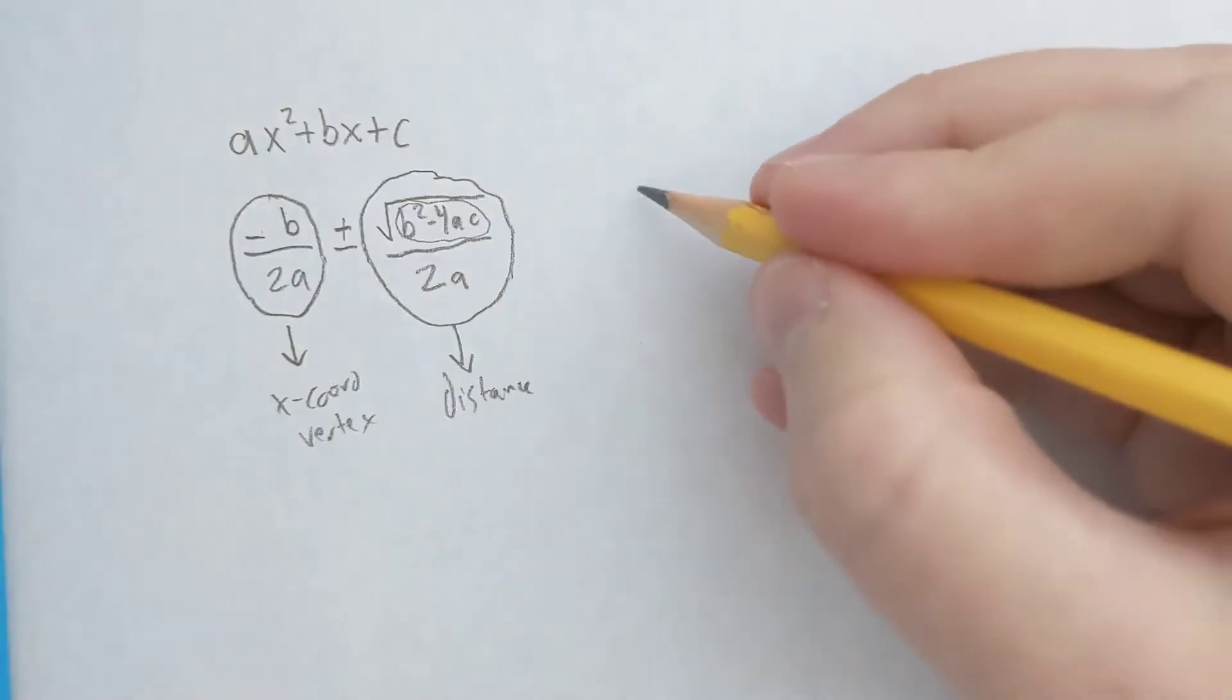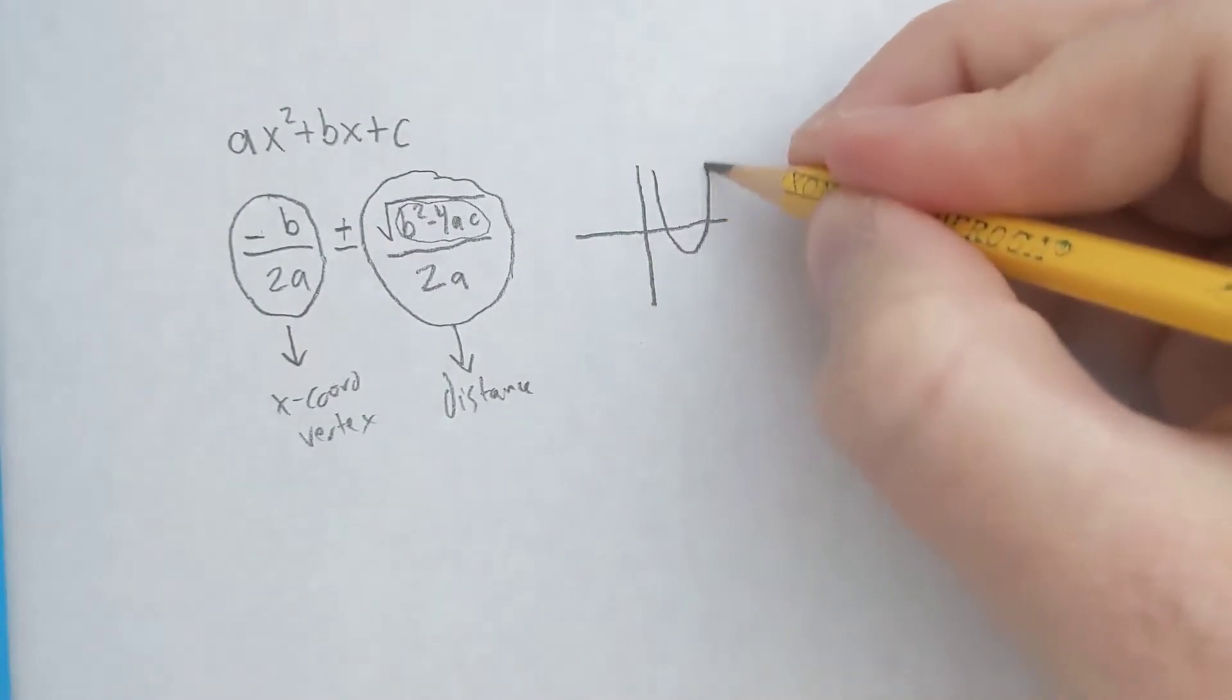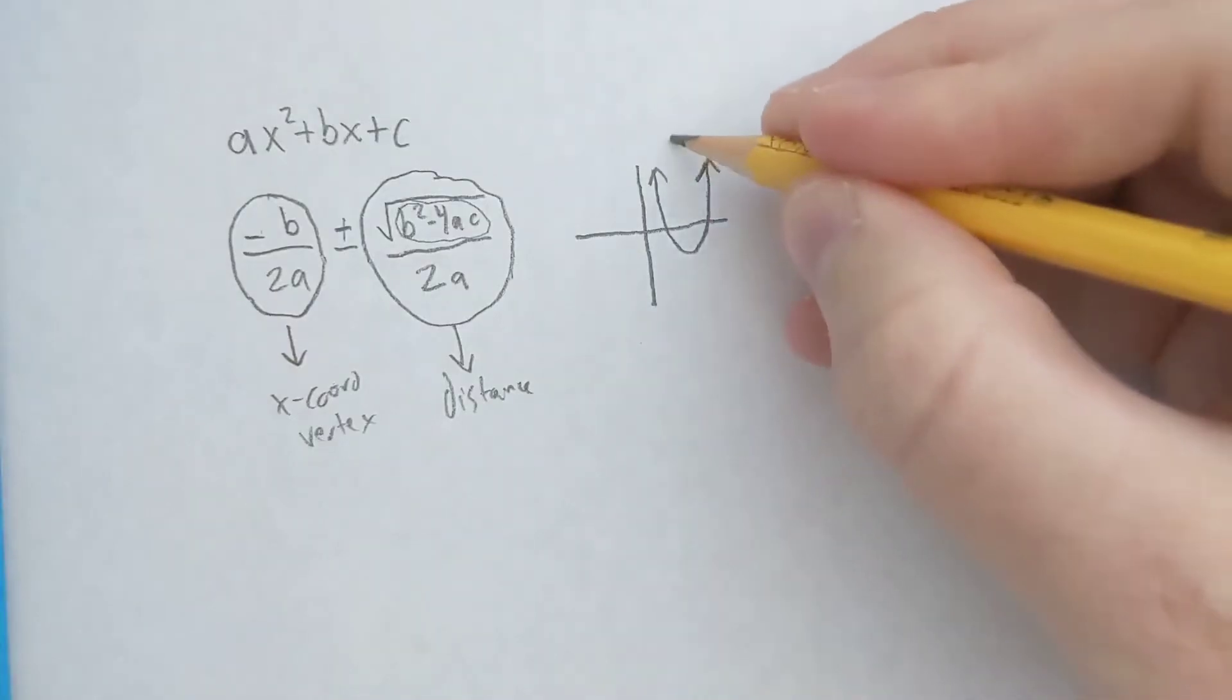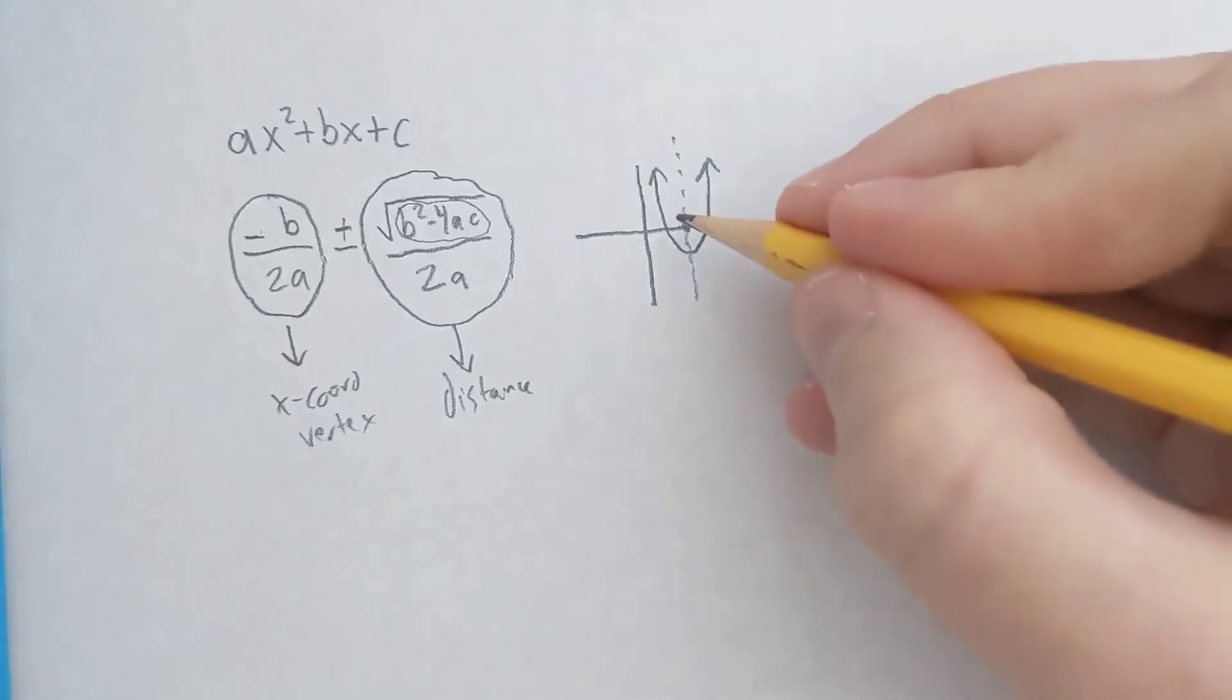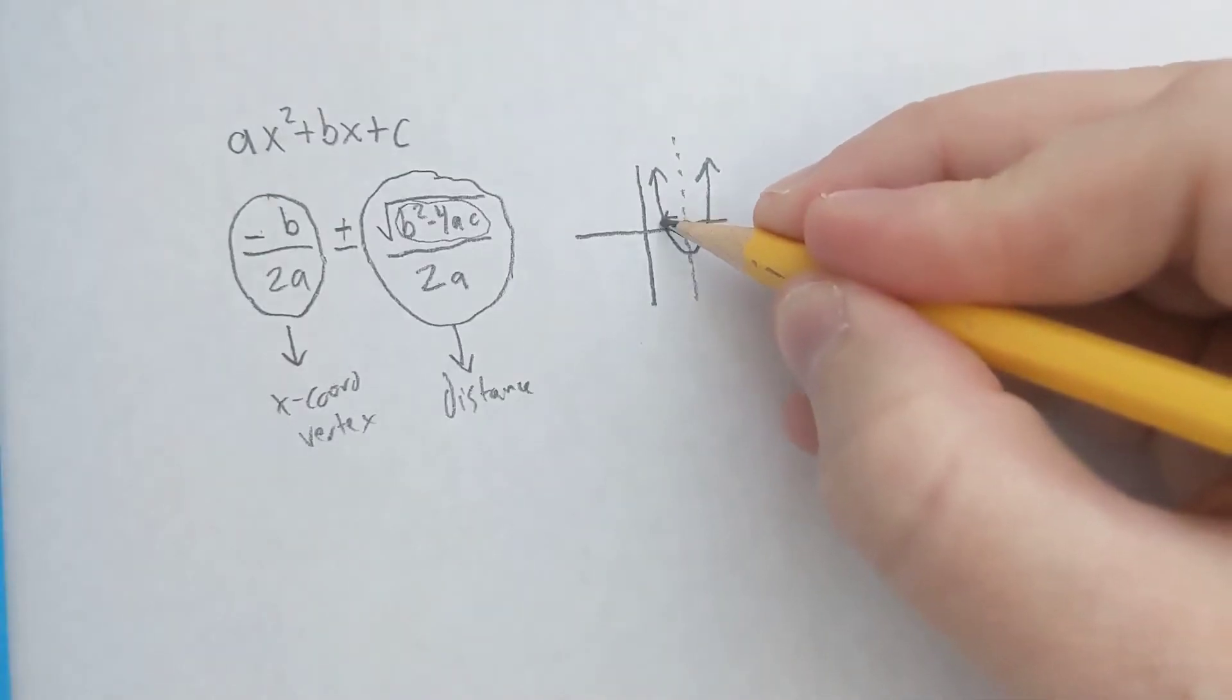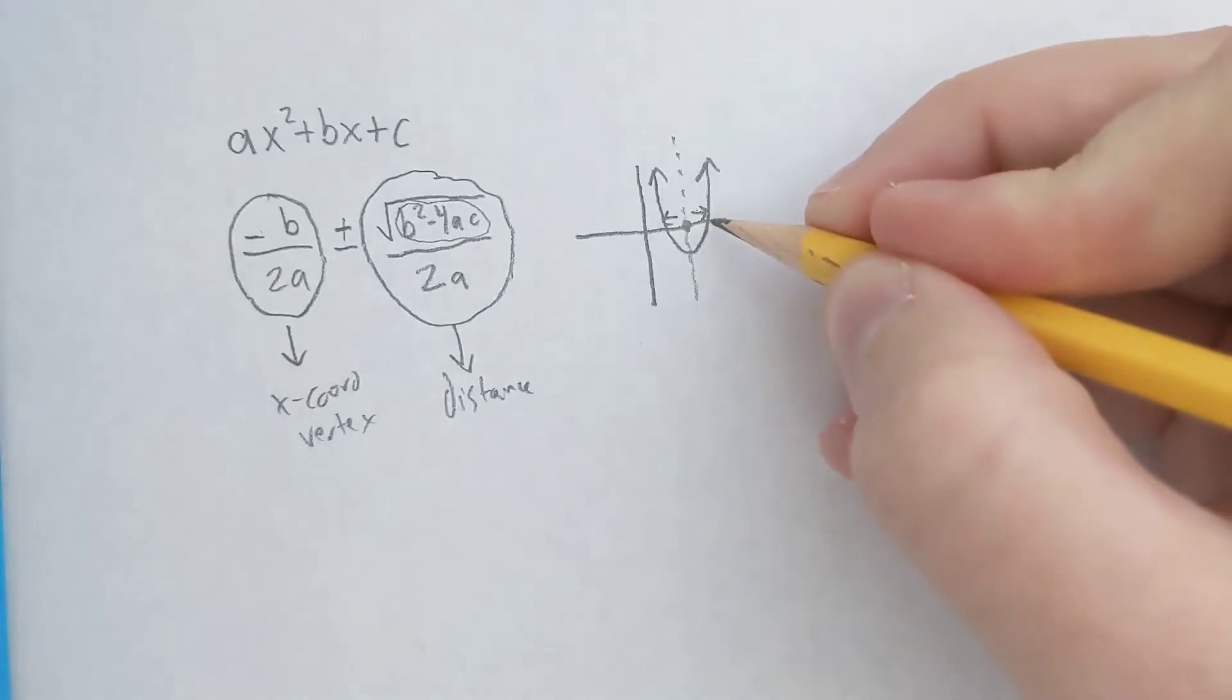There are basically three possible scenarios. One is that you've got a parabola like this, and here's our x-coordinate right here, the vertex. And you can see you could travel the same distance left or right before you would reach a root.